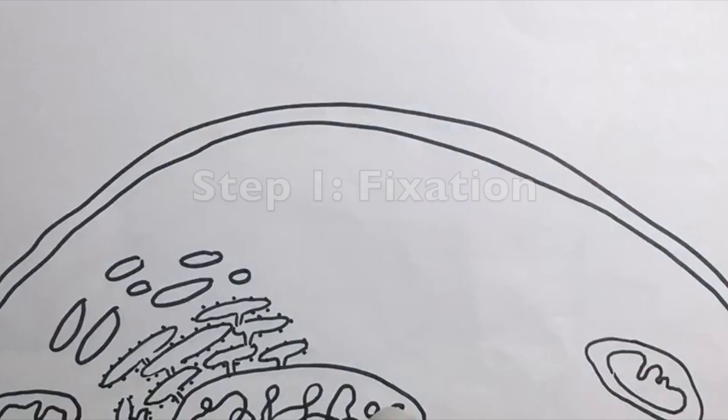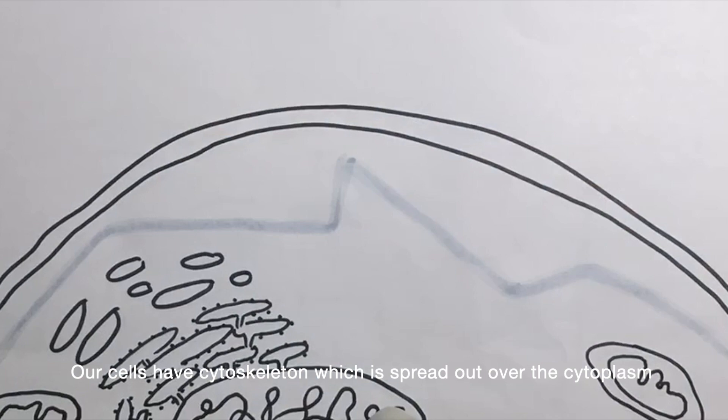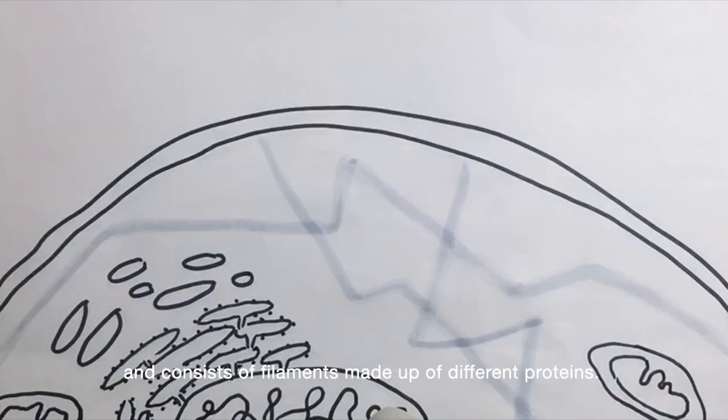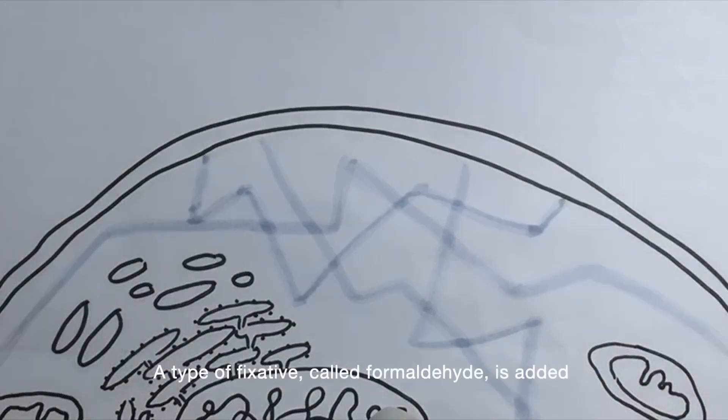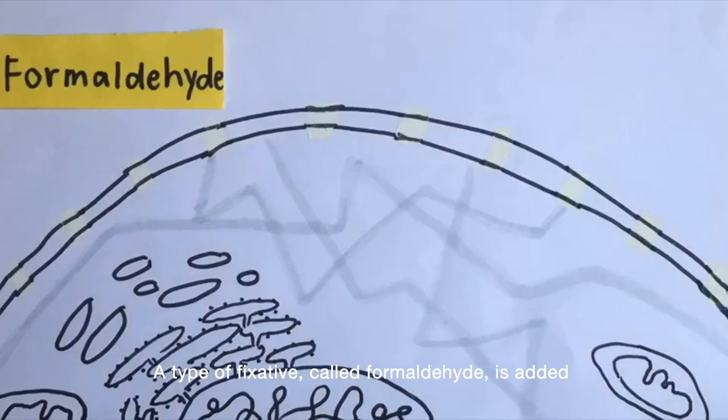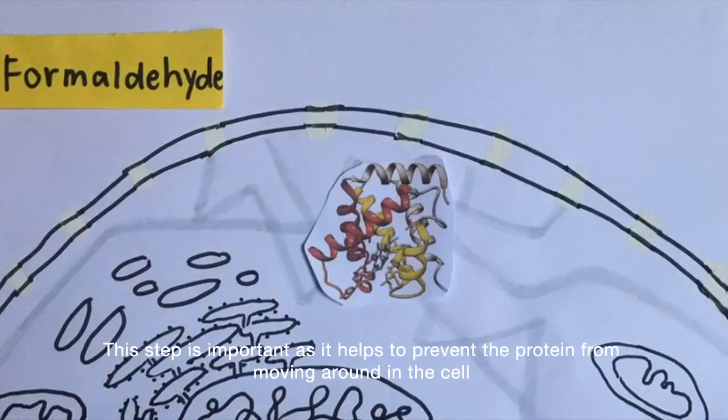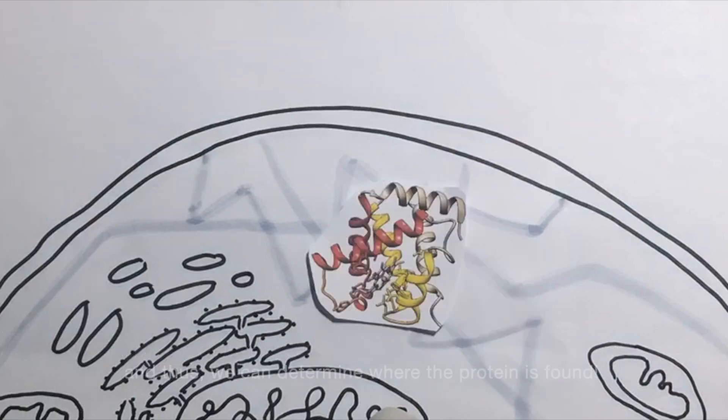Step 1, fixation. Our cells have cytoskeleton which is spread out over the cytoplasm and consists of filaments made up of different proteins. A type of fixative called formaldehyde is added to link the protein of interest to the cytoskeleton in a covalent manner. This step is important as it helps to prevent the protein from moving around in the cell and thus we can determine where the protein is found.